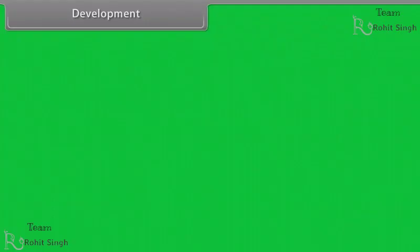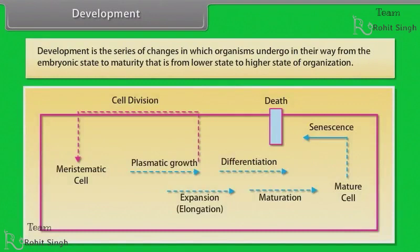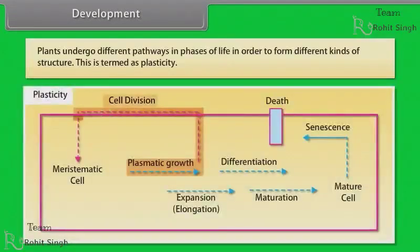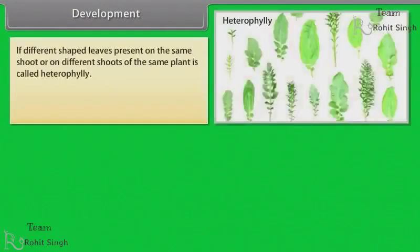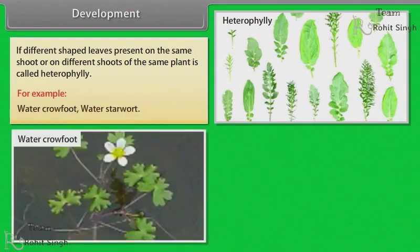Development is the series of changes in which organisms undergo in their way from the embryonic state to maturity — that is, from lower state to higher state of organization. Plants undergo different pathways and phases of life in order to form different kinds of structures; this is termed as plasticity. If different shaped leaves are present on the same shoot or on different shoots of the same plant, it is called heterophylly — for example, water crowfoot and water starwort.